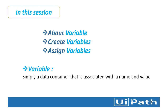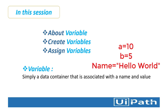First of all we will see what a variable is. A variable is simply a data container that is associated with a name and value. In UiPath Studio, variables are used to store multiple types of data ranging from generic value, text, number, data table, and time and date.